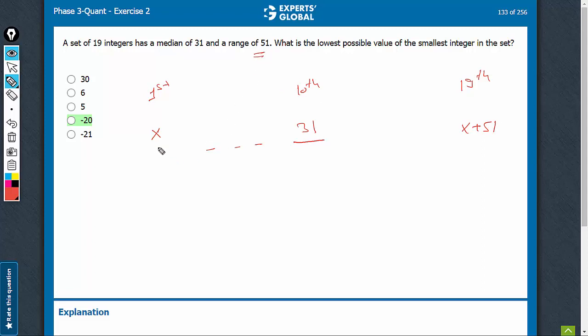We have to find the smallest value of x, for which we should, in turn, find the smallest value of x plus 51, because we know that the smallest value is exactly 51 less than the greatest value. So what can be the smallest value for the 19th term?